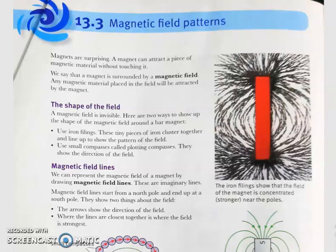Next, about the shape of the field and magnetic field lines. The magnetic field is invisible — we can only observe that the magnetic material is being attracted. Here are two ways to show the shape of the magnetic field around a bar magnet. The first method is to use iron filings — these tiny pieces of iron cluster together and line up to show the pattern of the field.